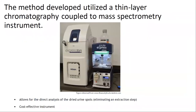The purpose of this research was to develop a screening method to identify common drug facilitated sexual assault drugs by the direct analysis of dried urine spots. The method utilized the Avion Plate Express coupled to the Avion Expression compact mass spectrometer. The Avion Plate Express is a thin layer chromatography plate reader that allows for a direct way to obtain mass spectra from TLC plates or dried matrix spots. It contains an elution head that lowers onto the spot of interest and extracts the sample, sending it to the mass spectrometer.